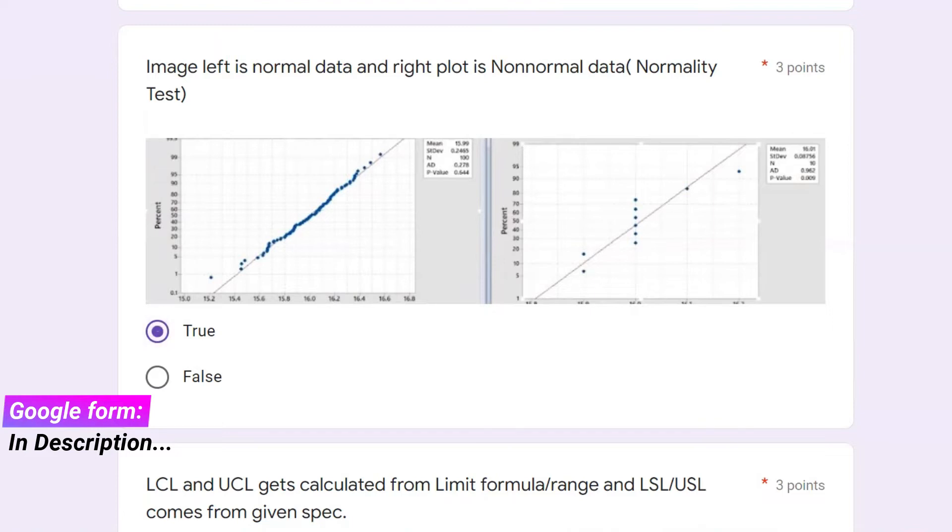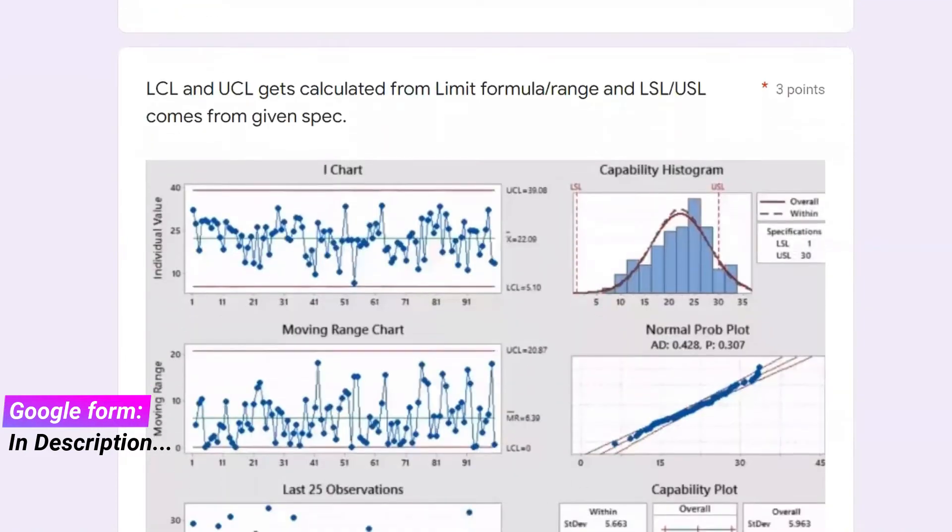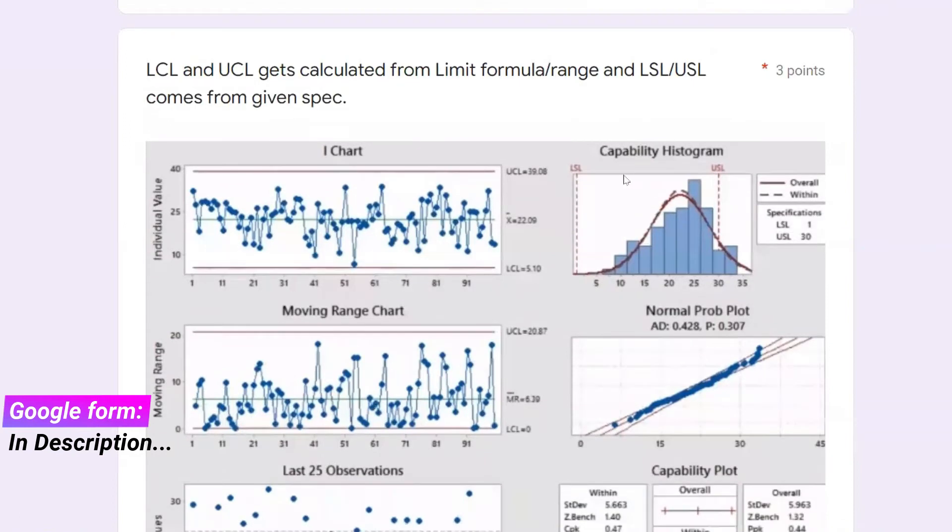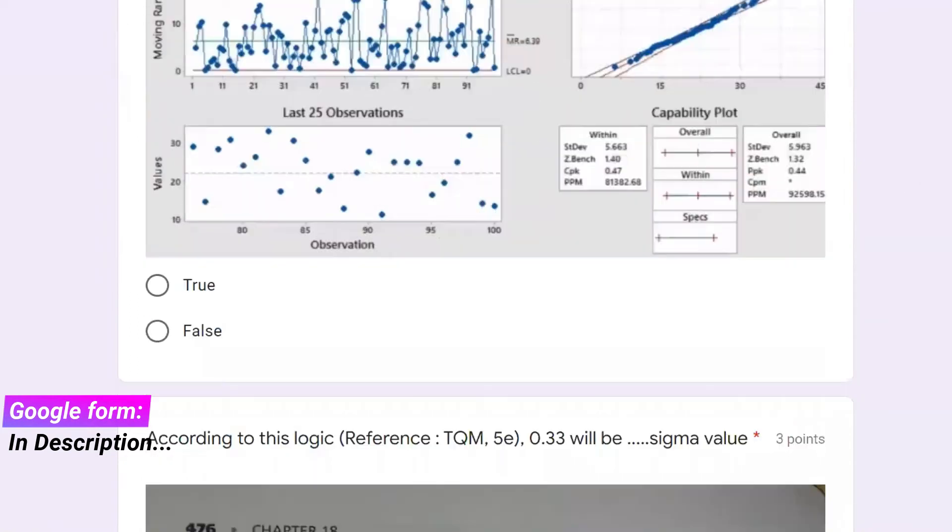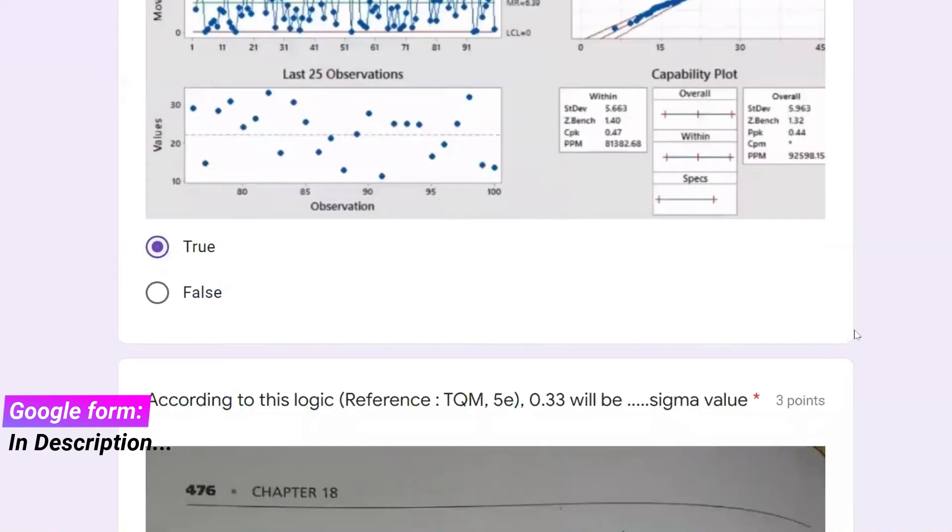LCL and UCL are calculated from the control chart limit formula. You can see here the X-bar R chart where 22 is the X-bar value and average value, LCL is 5 and UCL is 39. Whereas on the other side, the LSL and USL come from the spec. That's true. It comes from the specification given by the customer.